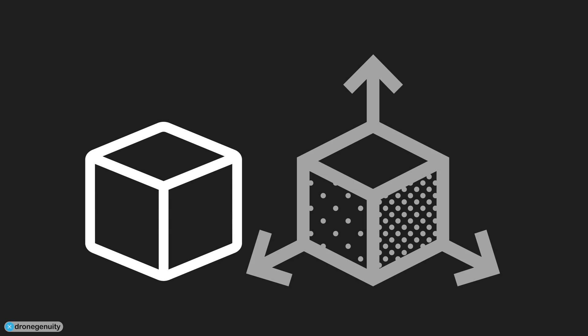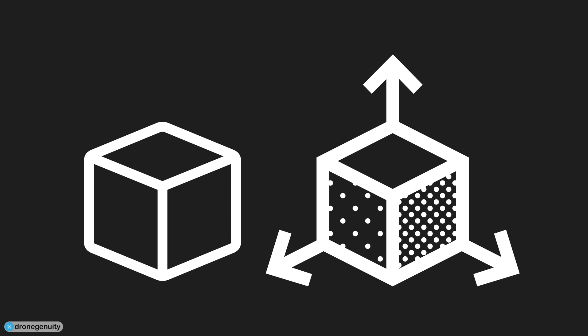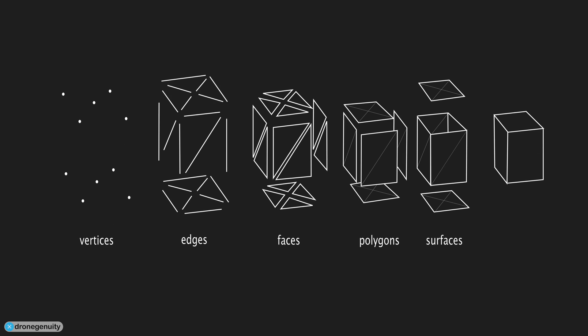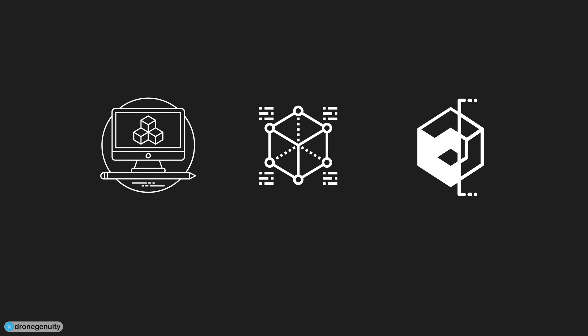First, what is a 3D model? It's a three-dimensional representation of an object created by plotting individual points in 3D space along the X, Y, and Z axes. The points are connected by geometric shapes, such as triangles, lines, or curved surfaces, to form the model. You can create a 3D model manually by using 3D modeling software, by using an algorithm, or by scanning a physical object.